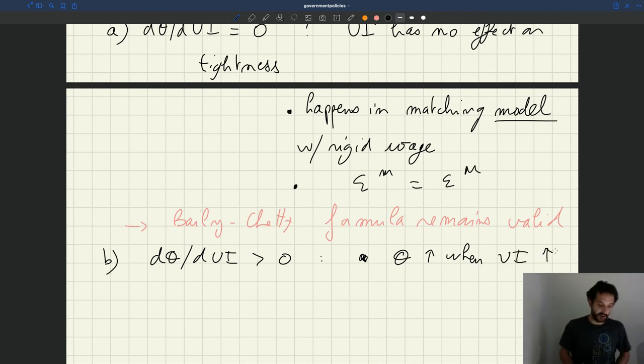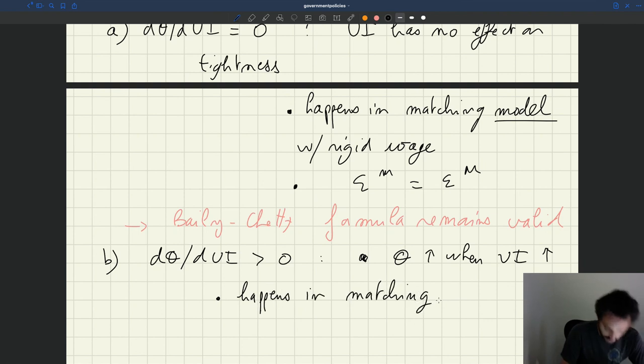Tightness goes up when UI goes up. So is that possible in theory? Well, yes, as we saw, this is exactly what happens in the matching model with job rationing. When you increase UI, the labor supply shifts in, and then you move along your labor demand, which is upward sloping.